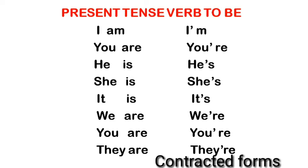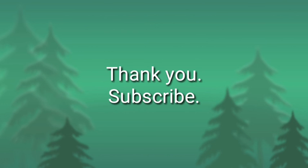Here are the contracted forms of the subject pronouns and the verb 'be': I am becomes I'm. You are becomes you're. He is becomes he's. She is becomes she's. It is becomes it's. We are becomes we're. You are becomes you're. They are becomes they're.